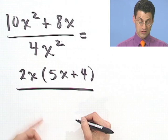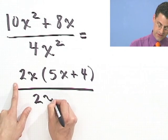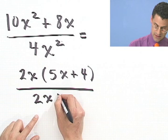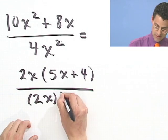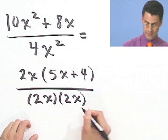And on the bottom, well, let me actually pull out a 2x there, just because I see the 2x dangling so nicely here. And so, in fact, I'll just write this as 2x times 2x.